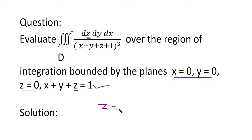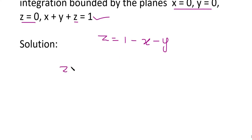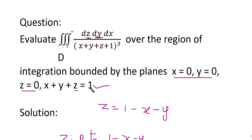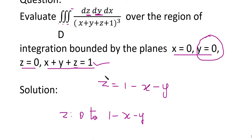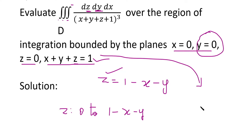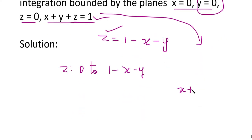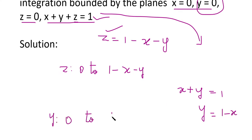The upper limit of z: z varies from 0 to 1 − x − y. Next, for the upper limit of y, we substitute z = 0 into the last equation x + y + z = 1, giving x + y + 0 = 1, so y = 1 − x. Therefore y varies from lower limit 0 to upper limit 1 − x.